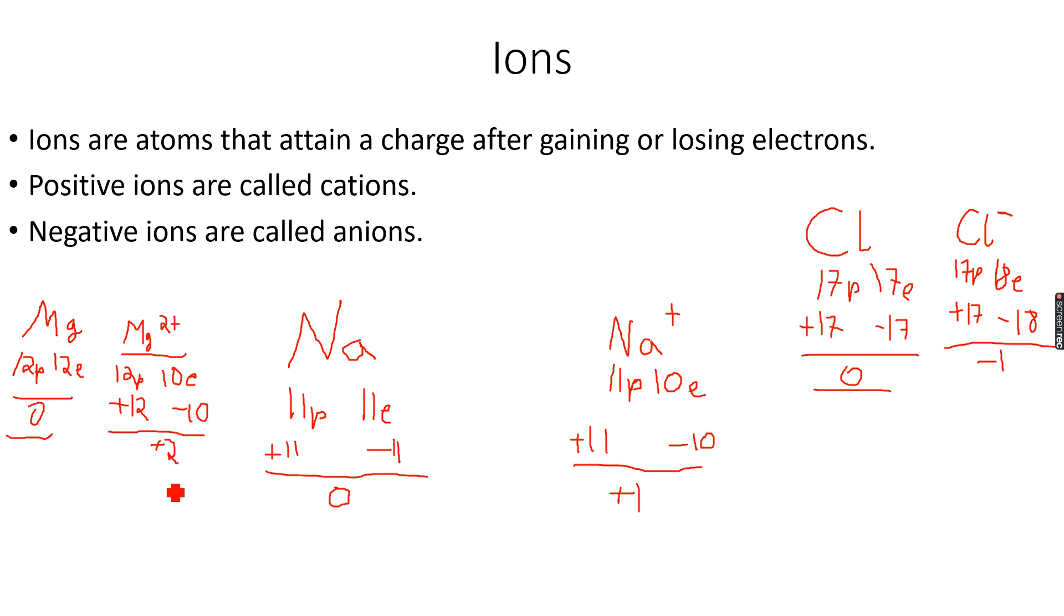...we get an overall charge of +2, so it has a 2+ charge—we write it as 2+. Similarly, this is 1+, so we don't write the 1, we just write +. This is the charge on the ion. So ions are basically atoms that have gained or lost electrons. Mg2+ and Na+ are cations, Cl- is an anion. We are done with atomic structure.